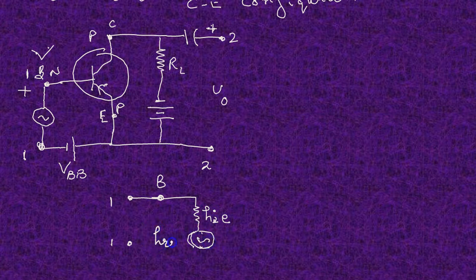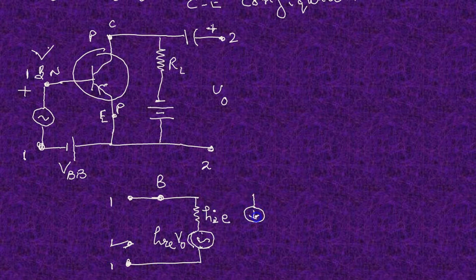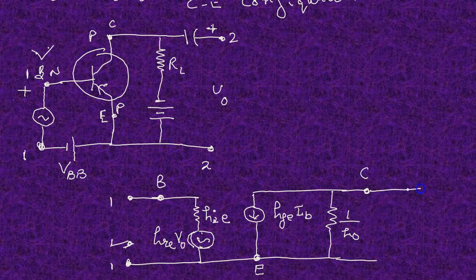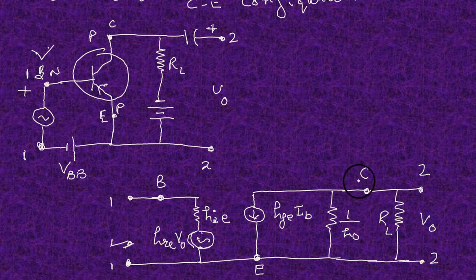This is the current source HFE into IB. This is 1 upon HOE, where HOE is output admittance, and here it is RL. So this is the h-parameter equivalent circuit of the BJT in common emitter configuration.